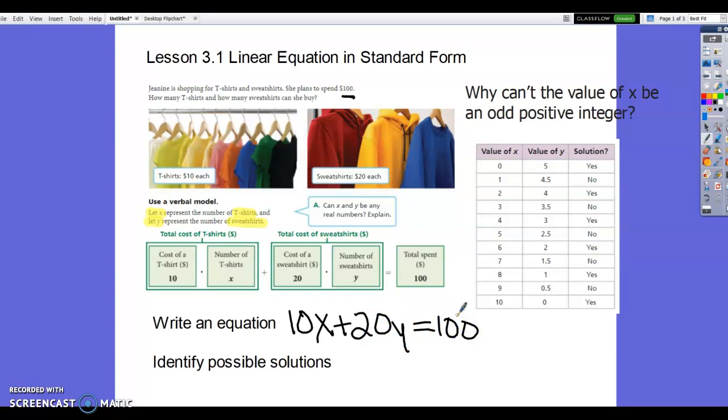Then it says identify possible solutions. So you can do that in a couple different ways. One is by using a table of values. X first, it can't be negative because you're not going to have a negative number of t-shirts. So we're going to start with zero. And then they just made a list of zero to 10. So you just choose X values that could be reasonable. So then when we look at that, if we have zero t-shirts and five sweatshirts, could that be a possible solution? Yes. You could have no t-shirts and five sweatshirts. That makes sense.